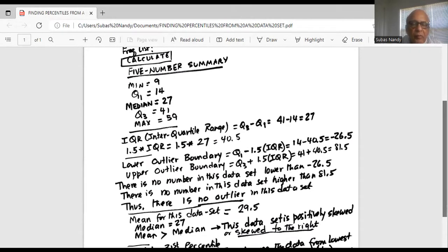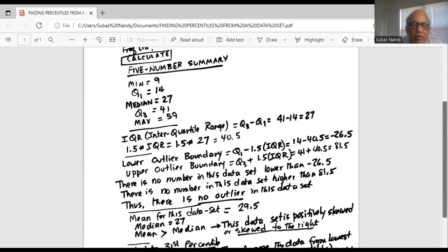We find the upper outlier boundary, or the upper outlier fence, is Q3 plus 1.5 IQR, which is 41 plus 40.5, equals 81.5.